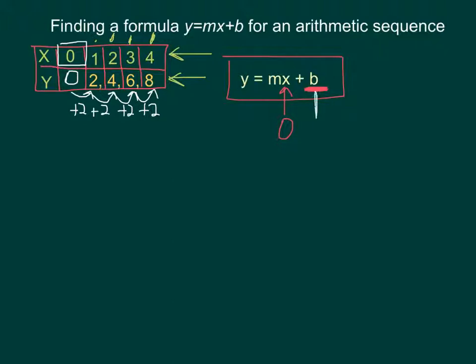So when x is 0, in this case, b is also 0. So my last question is, what do I put in for m?